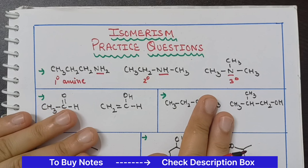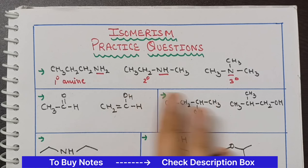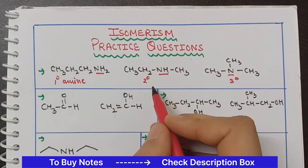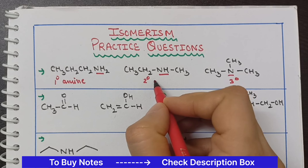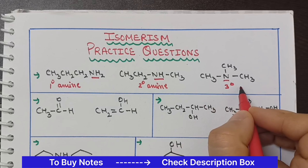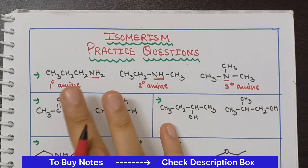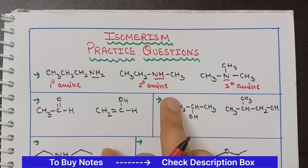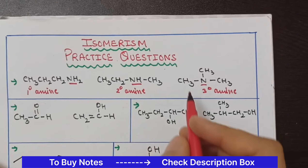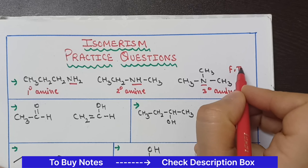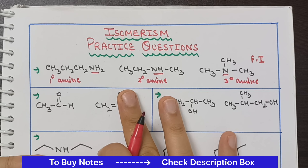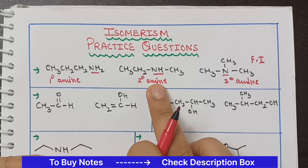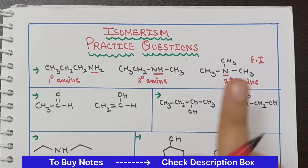We have different functional groups here — 1° amine, 2° amine, and 3° amine. Compounds with the same molecular formula but different functional groups are called functional isomers. So these three are functional isomers because the only difference is the functional group: 1° amine, 2° amine, and 3° amine. First question is done.